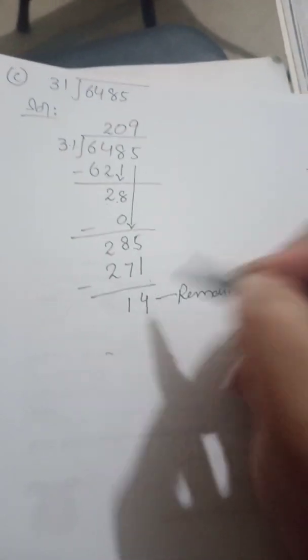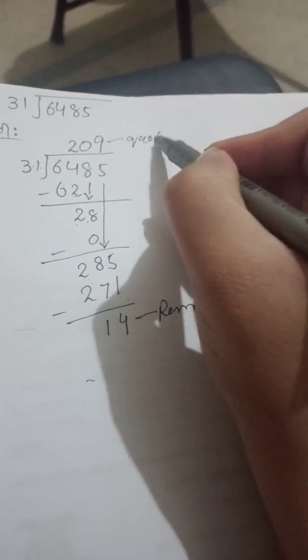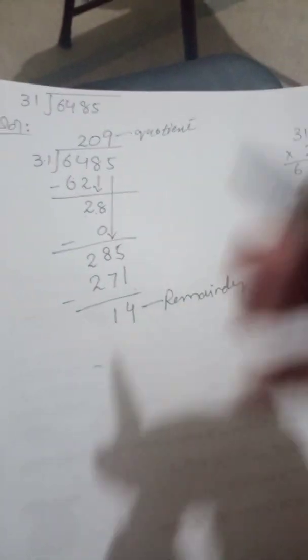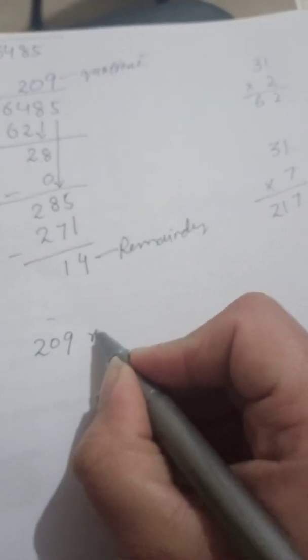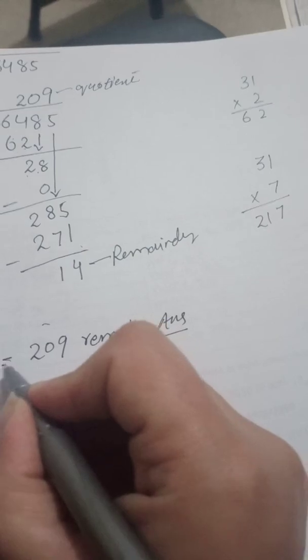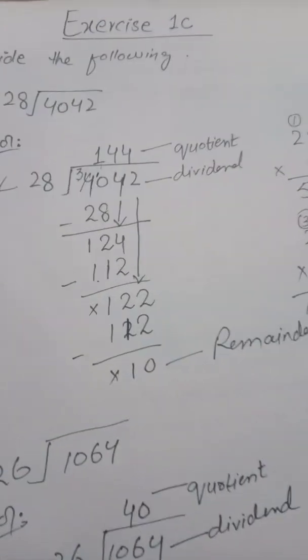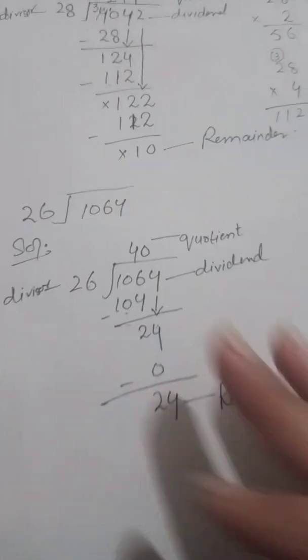Now subtract: 5 minus 1 is 4, 8 minus 7 is 1, and 2 minus 2 is 0. The result is 14. Since there are no more digits to bring down, 14 is our remainder. And 209 is our quotient.